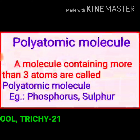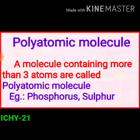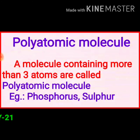Polyatomic molecule. Poly means many. A molecule containing more than three atoms is called a polyatomic molecule. Phosphorus and sulfur are the best examples of polyatomic molecules. In a phosphorus molecule, there are four phosphorus atoms present. In a sulfur molecule, eight sulfur atoms are present.